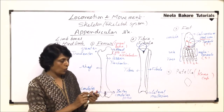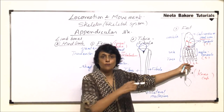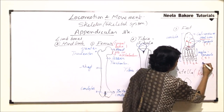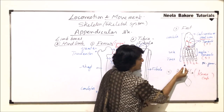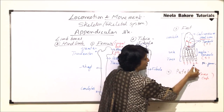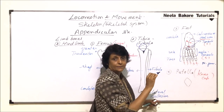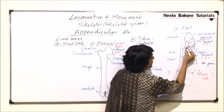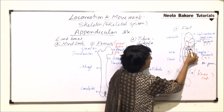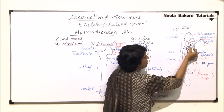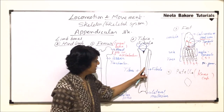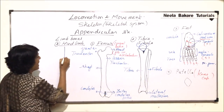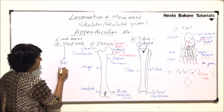If we count all the bones in the hind limb: the phalanges give 2+3+3+3+3 = 14 bones, plus five metatarsals makes 19, plus seven tarsals makes 26, plus one tibia and one fibula makes 28, plus one femur makes 29, and finally the patella makes 30. So in our hind limb there are 30 bones in total.